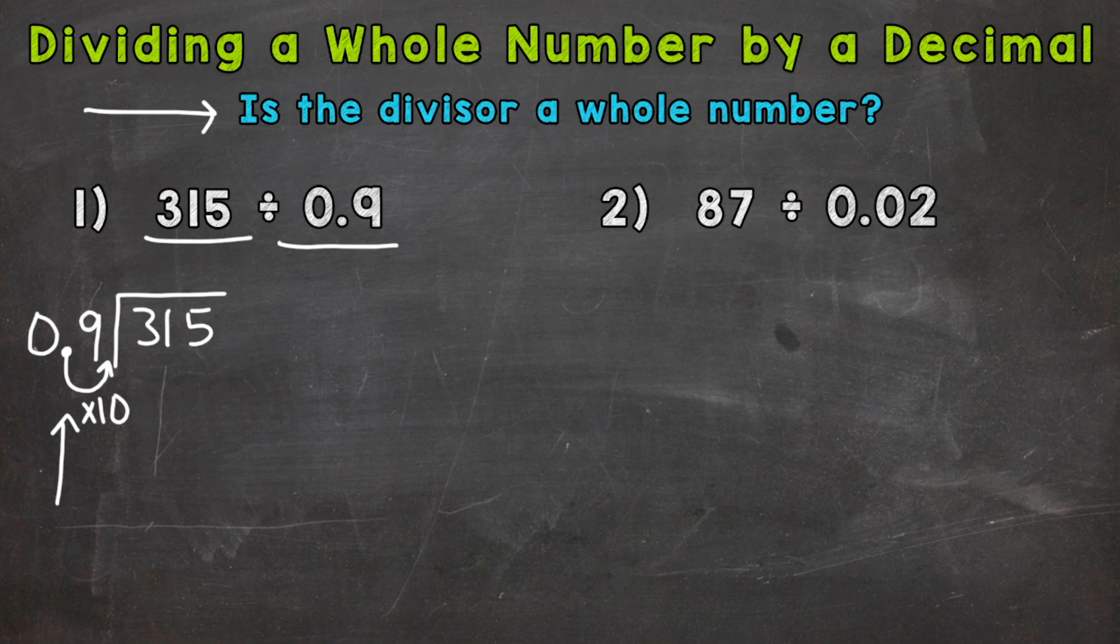So we have a whole divisor now, but whatever we do to the outside, we have to do to the inside in order to keep this problem balanced and not change the value of the overall problem. So we need to multiply the inside number by 10 as well. So the decimal comes at the end of any whole number.